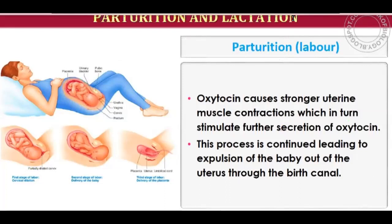Once the baby is delivered, the uterine contractions and oxytocin secretion cease. This process leads to the expulsion of the baby out of the uterus through the birth canal. The birth canal is the vagina — delivery of the baby occurs through the vagina, driven by oxytocin and uterine contractions.